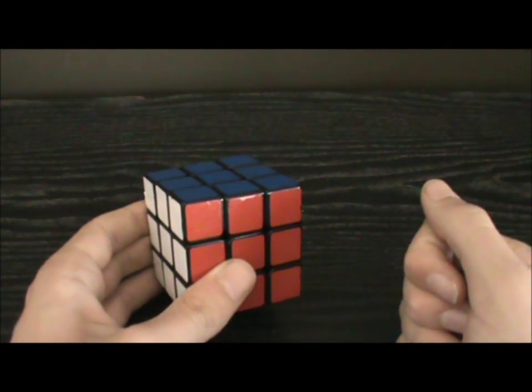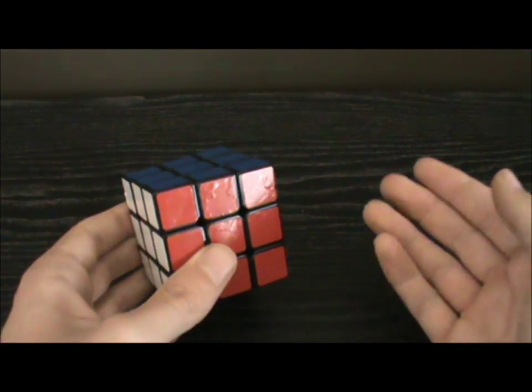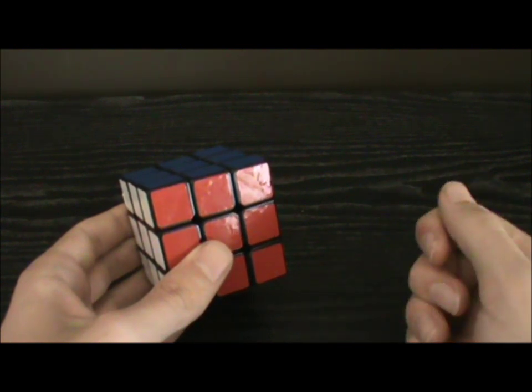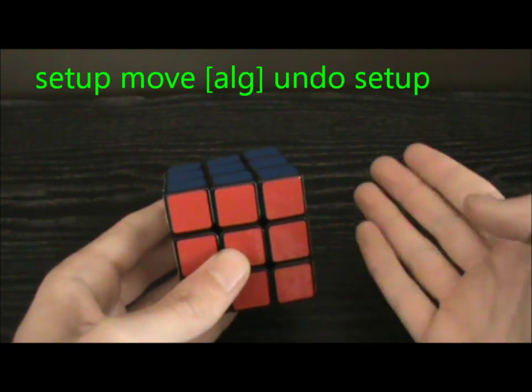This video is made under the assumption that you already have a little bit of experience with blindfold solving. In a way, M2 is very similar to the classic Pochmann method. That is, you do a setup move, then an algorithm, then undo the setup move.